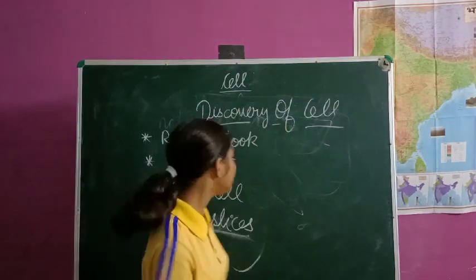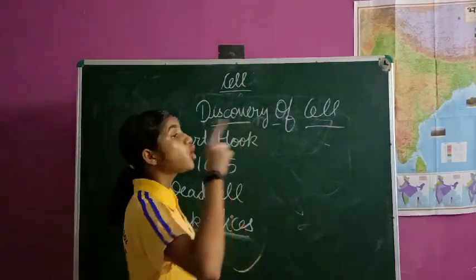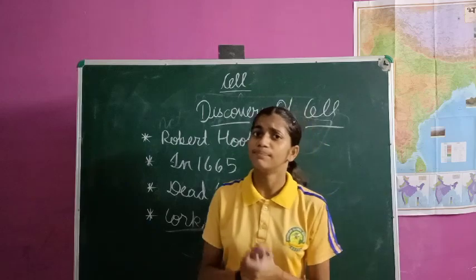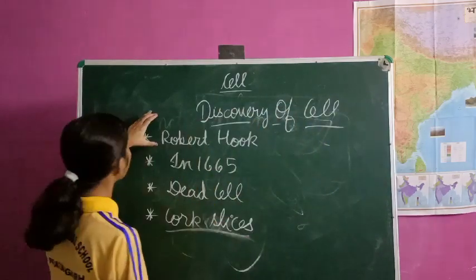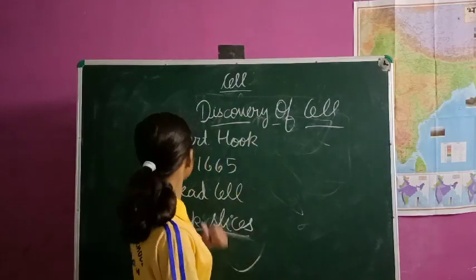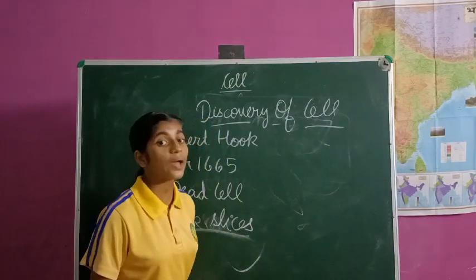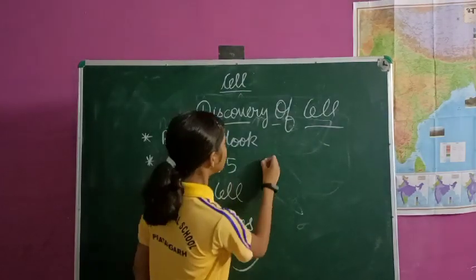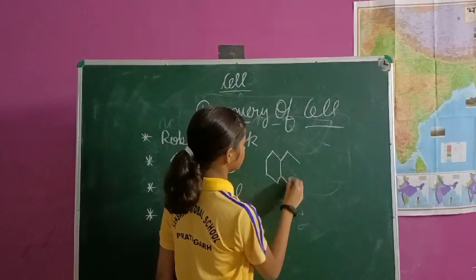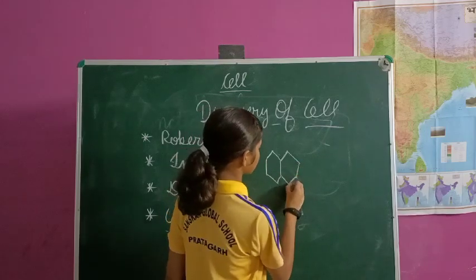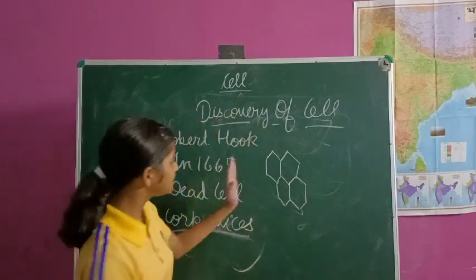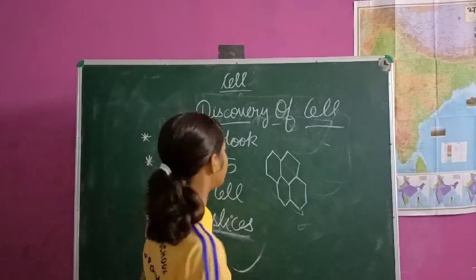That was a dead cell, and it was done with the help of cork slices using a microscope. Robert Hooke observed the cell with a normal microscope, and that was a dead cell. The first time the cell was discovered, when it was found, its structure was like a honeycomb structure.